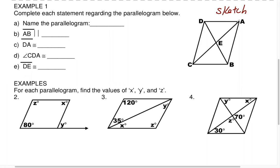You can name it in any order as long as you go in a counterclockwise or clockwise manner. Starting here I'm going to call it A, D, C, B — capital ADCB with no commas or spaces, just the four capital letters together.